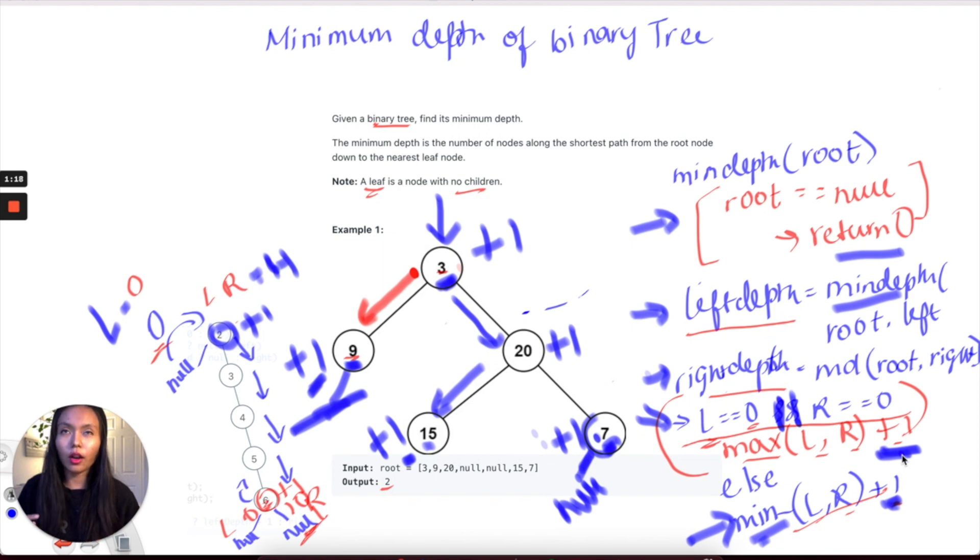We're doing the plus 1 because we want to add the current node we're in. I have solved a similar problem like this on my channel and I will link it in the cards up here somewhere. It's the maximum depth where I go into more details about why we're adding this plus 1. Generally, we're adding that 1 to make sure that we count the current node we're on. With that, we should be able to solve this question. Let's go ahead and look at the code.